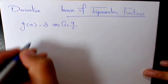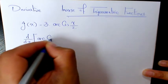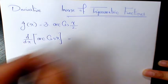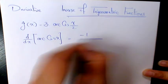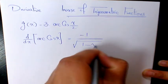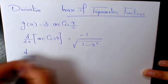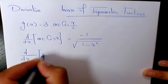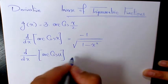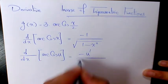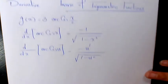We know the derivative of arc cosine x with respect to x is going to be negative 1 over square root of 1 minus x squared. And the derivative of arc cosine u, when u is a function of x, is going to be negative u prime over square root of 1 minus u squared.